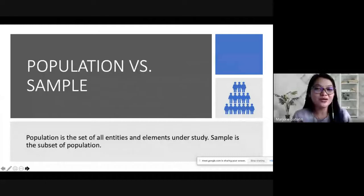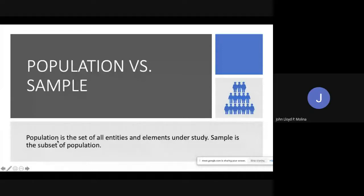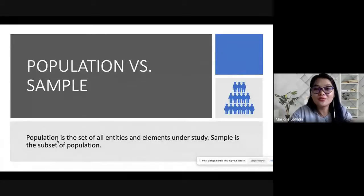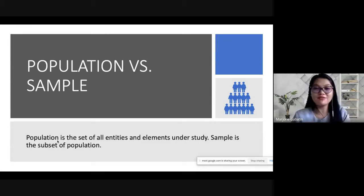Now let's discuss the difference between population and sample. Population is the set of entities or elements under study, while sample is the subset of the population. For example, all students of Sagurong High School — that is the population, meaning all students from Grade 7 to Grade 12.